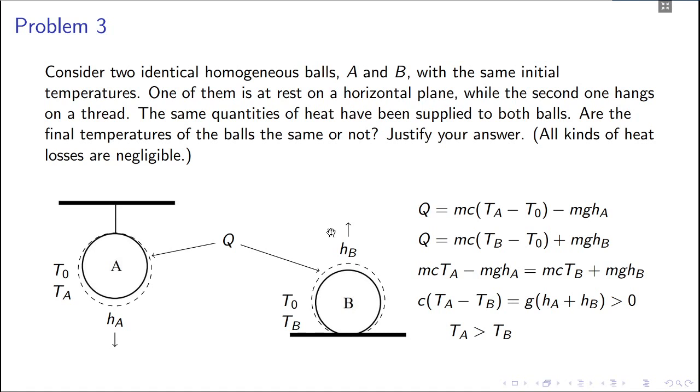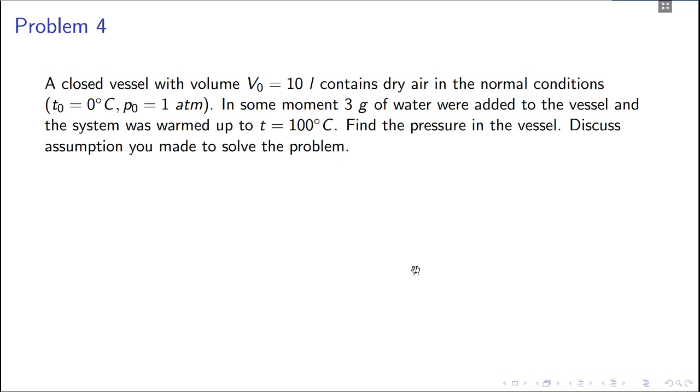This is the final problem. It says there is a vessel with volume V0 of 10 liters and it has dry air. At some moment some water is added, 3 grams, and the system was warmed up to 100 degrees Celsius. So you just find the final pressure. First of all you have to see whether all the water will evaporate or only some will evaporate and some water will remain. First thing is you assume all the water evaporates. Then the density of vapor will be 3 by 10, that's 0.3, and that is actually less than the density of the saturation of the vapor, you know.